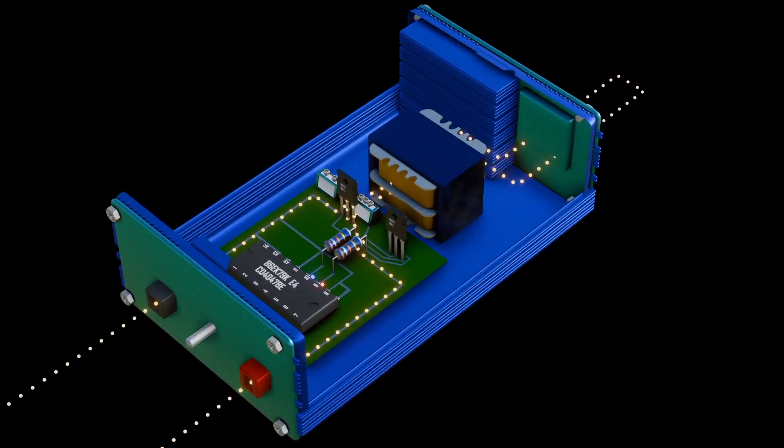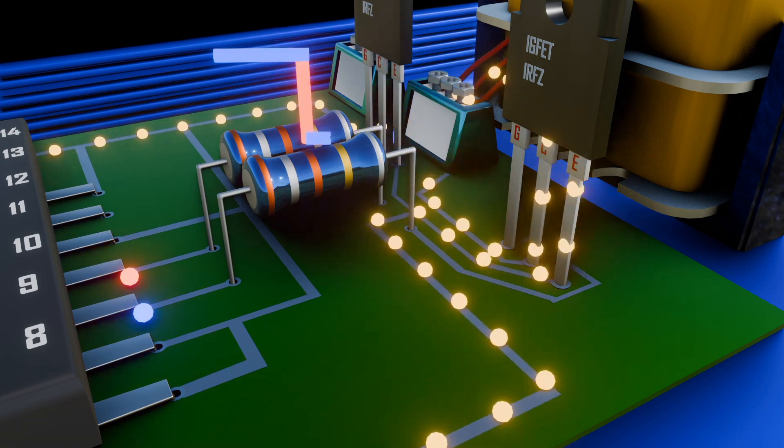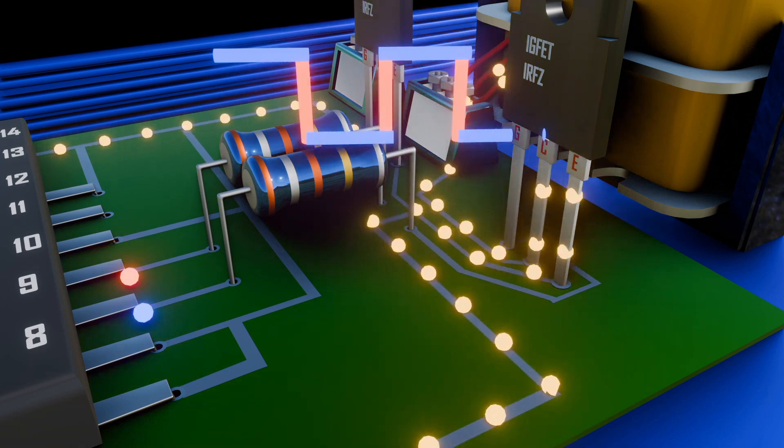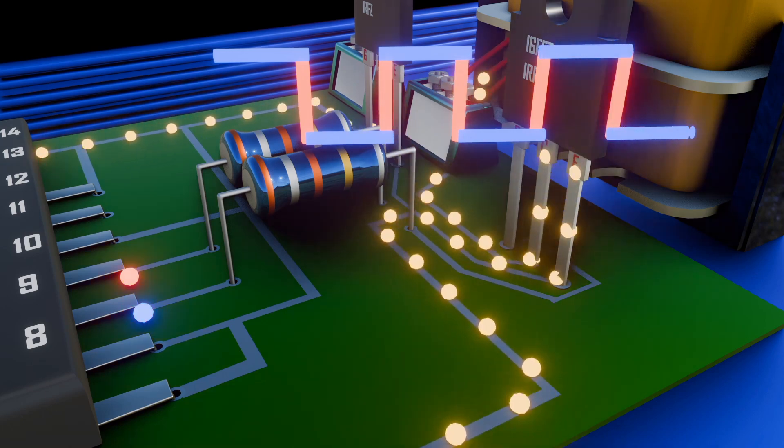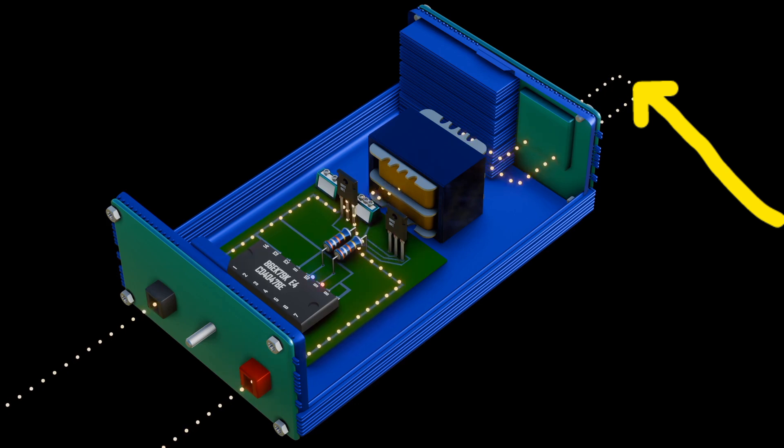When a voltage is applied at the gate terminal, it controls the conductivity between the collector and emitter. Therefore, in this circuit, if we apply voltage to the gate of one transistor, it allows conduction. Applying the gate voltage to the other transistor also allows for conduction. Now the second part of the circuit will experience the alternating current, since when the first transistor is high, the other transistor is low.